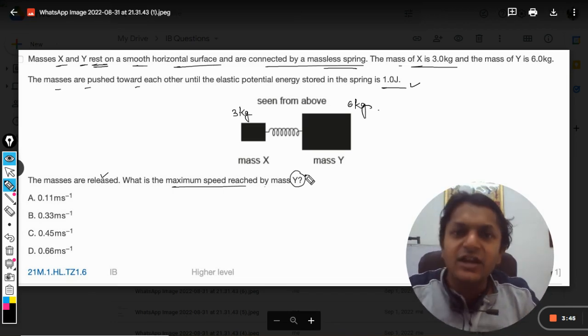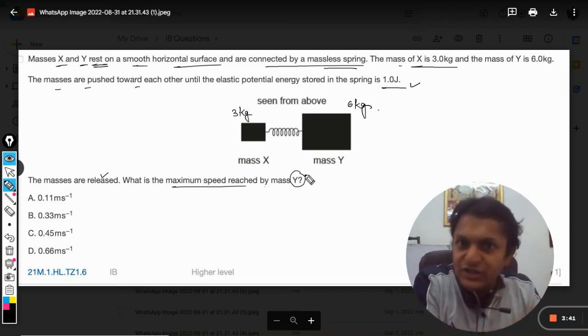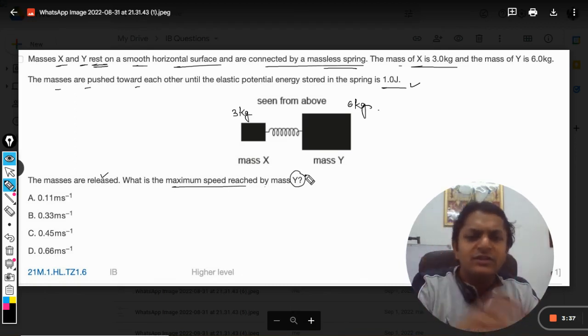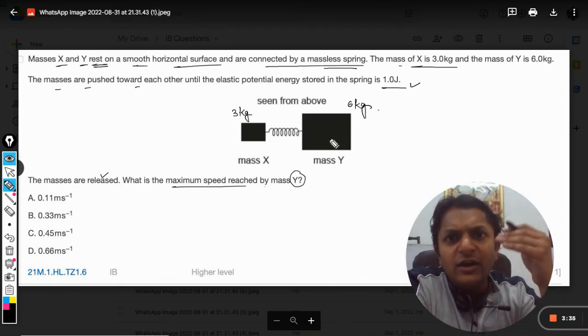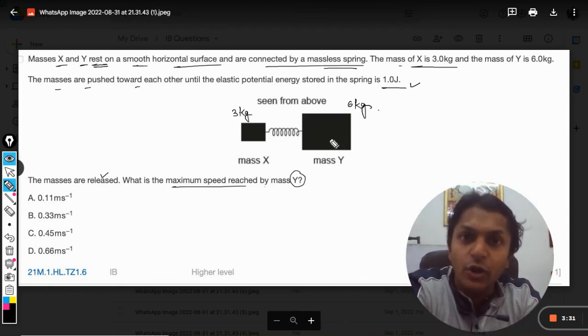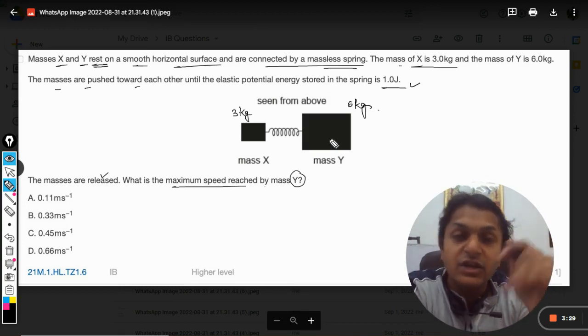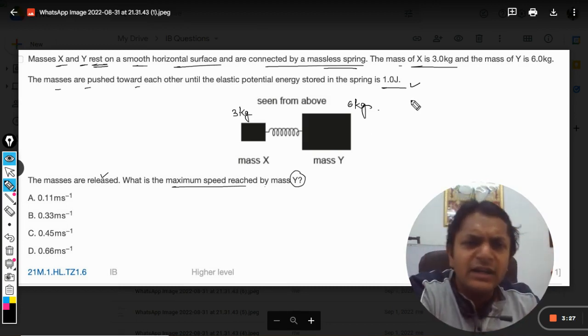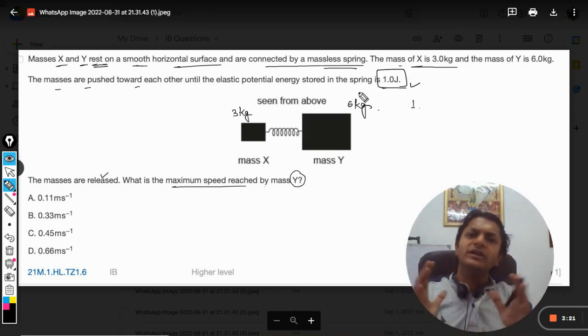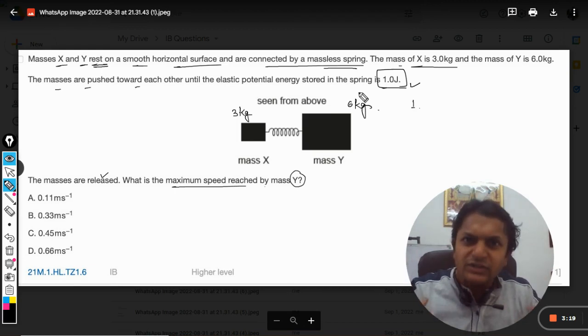The conservation of linear momentum is always valid for collisions as well as explosions. So the first equation will be from momentum and the second equation will be energy conservation - energy cannot be created nor destroyed. So there are two equations. Let us first write the energy. The total energy earlier when the spring was compressed and both bodies are at rest.